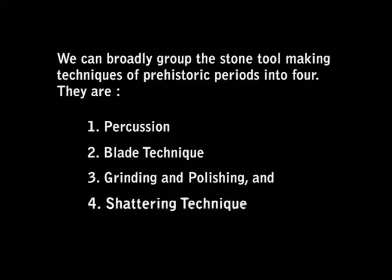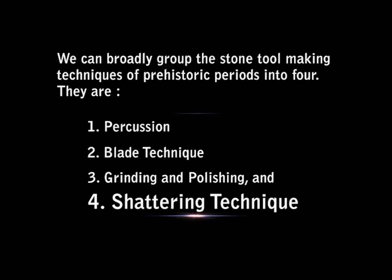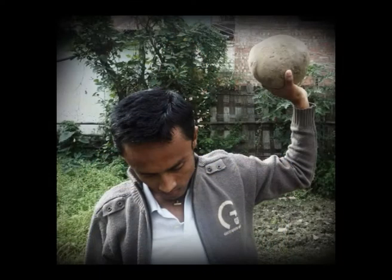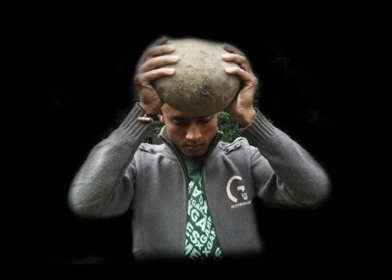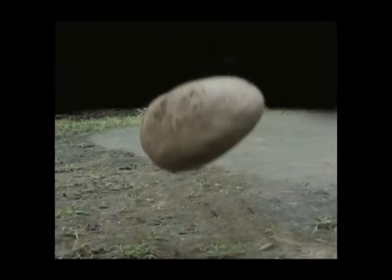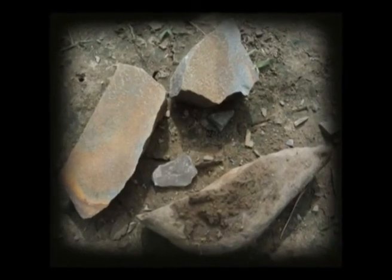Let us come to the fourth group of tool-making techniques: shattering technique. This type of tool-making technique is very simple. In this technique, the manufacturer holds a suitable stone with both hands, raises it to a certain height, and then releases it so that the rock breaks into pieces when it hits the ground. The flakes or rock pieces thus produced do not possess either a negative or positive bulb of percussion. From such flakes, any required size can be selected and trimmed further by using either grinding or stone hammering. This tool-making technique is confined to Southeast Asia.